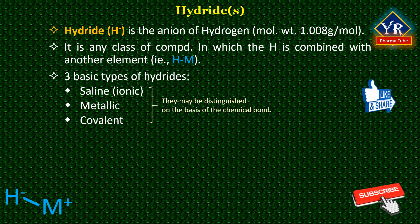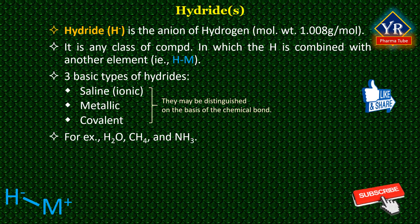They may be distinguished on the basis of the types of chemical bond that is involved. For example, some of the most popular hydrides that are covalently bound to hydrogen atoms are water, methane, and ammonia. Water is a hydride of oxygen, methane is a hydride of carbon, and ammonia is a hydride of nitrogen.